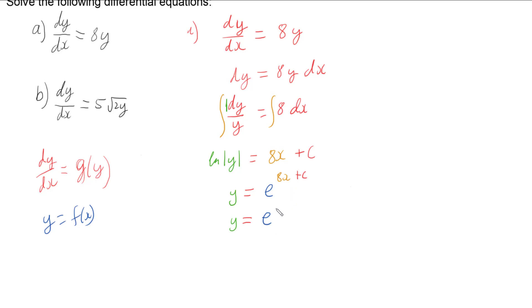What I mean is we can have e to the c times by e to the 8x, because if I wanted to join these back together using the index law I would end up with c plus 8x or 8x plus c.